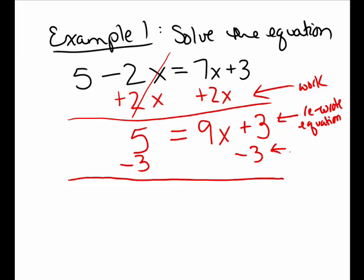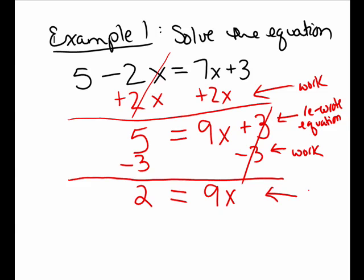I show the work that I'm subtracting 3 on both sides, and now I'm going to rewrite my entire equation. On the left side, I have 5 take away 3, so that's 2 on the left. On the right side, I had 3, but I took away 3, so that cancelled out, leaving only 9x on the right side.